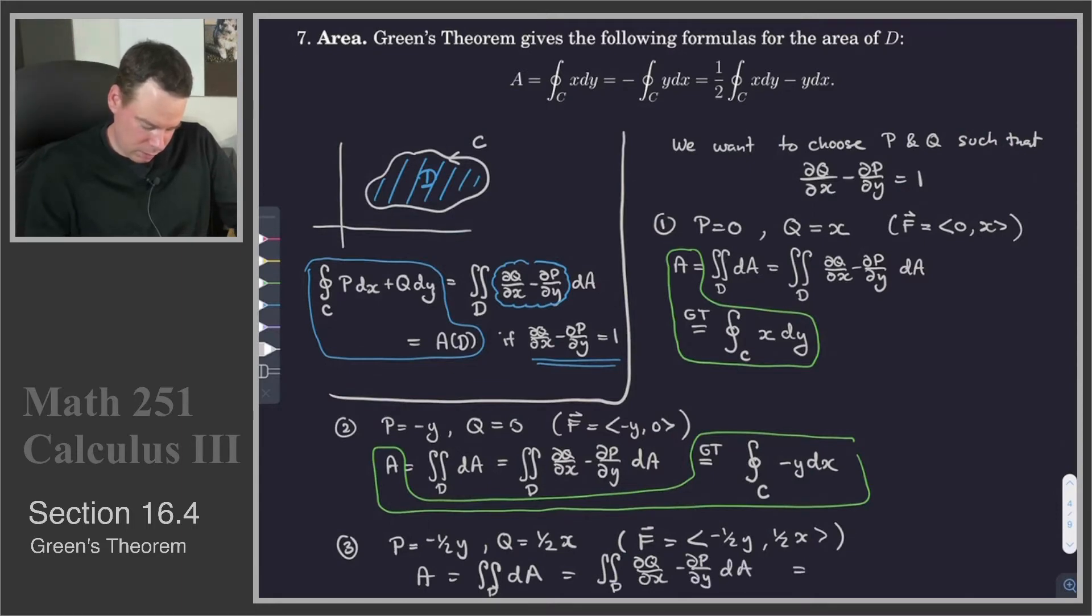And then, by Green's Theorem, this double integral becomes the line integral, the integral around the curve C of P, which is -1/2 y, dx plus 1/2 x, so Q dy. And that's another expression we have for our area.